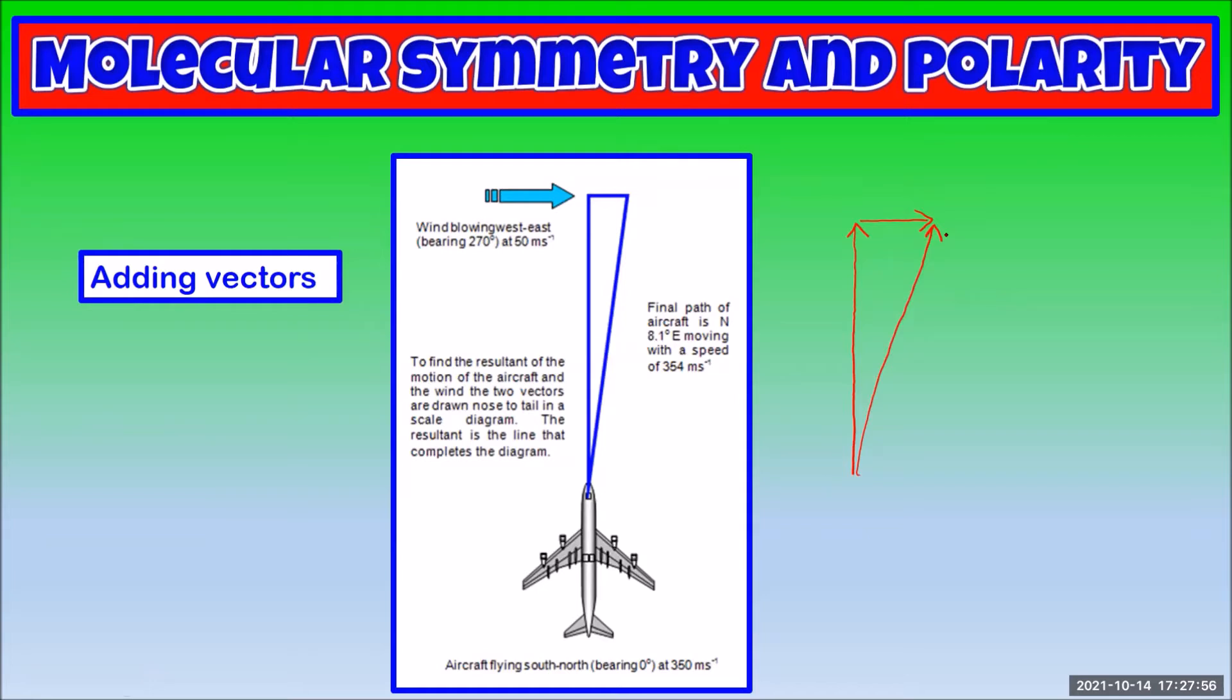To get the sum, we draw a vector from the start of the first vector to the end of the last vector. This represents the combination of the plane's velocity and the wind's velocity. This is the actual speed and direction or velocity of the plane.